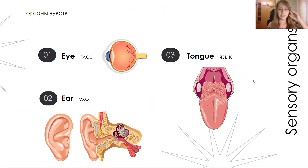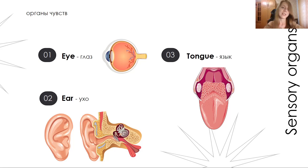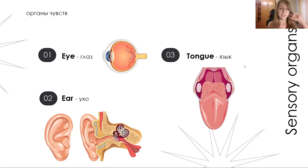The next are sensory organs. Here we name the eyes — we have two eyes — and the ears — we have two ears — and of course the tongue. Eyes help us to see, ears help us to hear, and the tongue is responsible for taste.